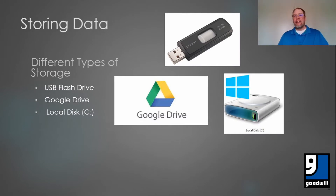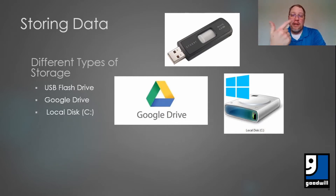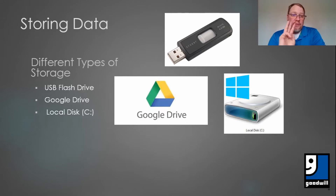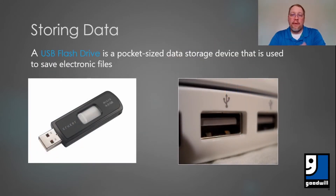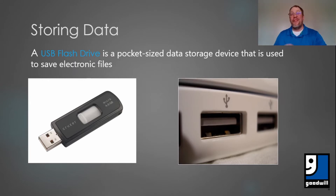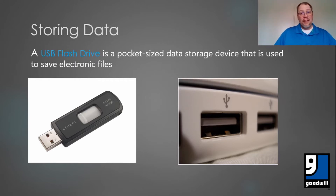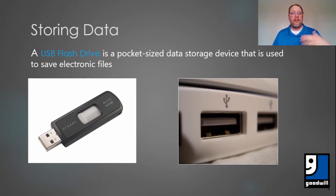Storing data. I can guarantee at some point in your life you have used one of these three storage devices, whether you've used a phone, a computer, or a laptop. The three main types of storage devices for any computer system are your USB flash drive, your Google Drive, and your local C disk. We're going to start with probably the smallest form of storage out there — and when I say small, I mean physically small. A USB flash drive is a pocket-sized data storage device used to save electronic files. As you can see here, these are USB drives — they're everywhere, they're thumb drives, they fit in your pocket and on your keychain.